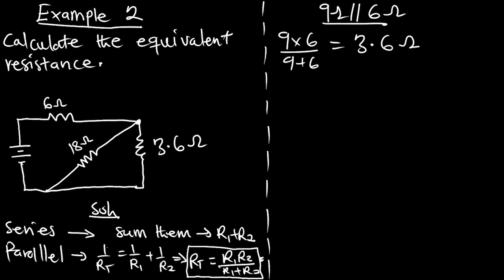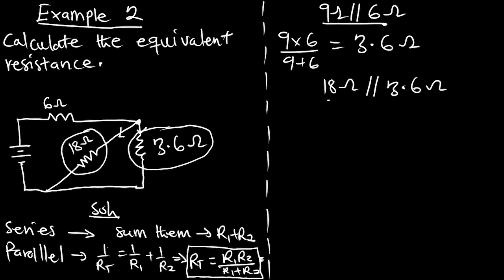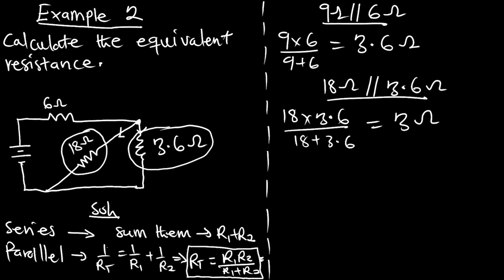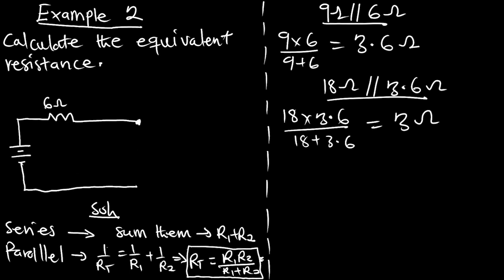The 18-ohm resistor is parallel to the 3.6-ohm resistor because the current through each path is different. Using the parallel formula: (18 × 3.6) / (18 + 3.6) = 3 ohms. We now have 3 ohms representing the combined effect of those two resistors. Redrawing, those two are replaced by a single 3-ohm resistor.